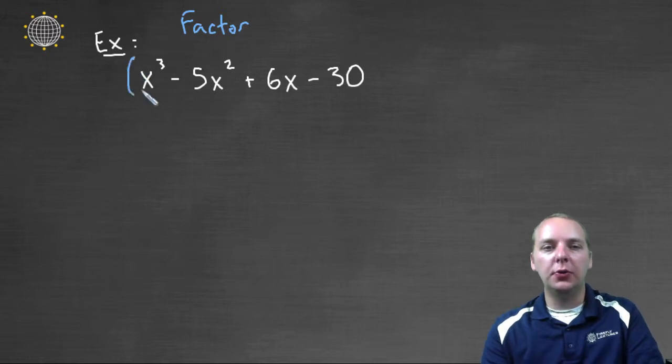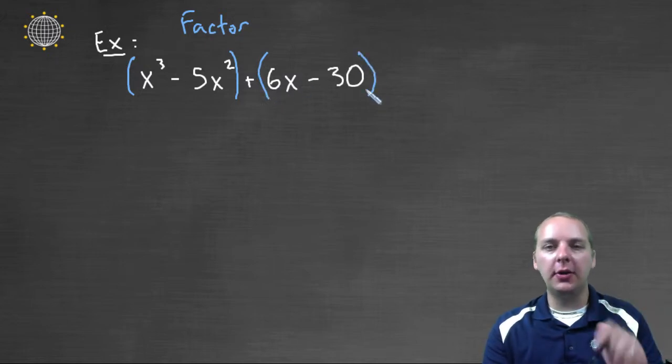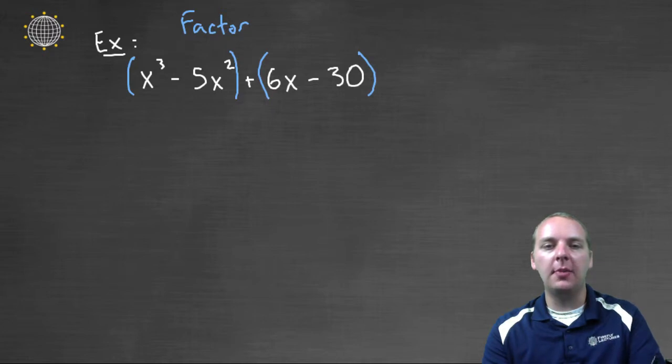What we're going to do is we're going to group the first two terms, and then we're going to group the last two terms. Now not to get off on a tangent real quick, but I do need to make a quick little side comment. Here we have a plus, and so we can just put parentheses here and here.